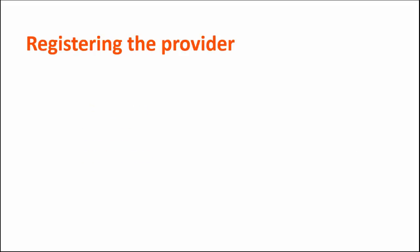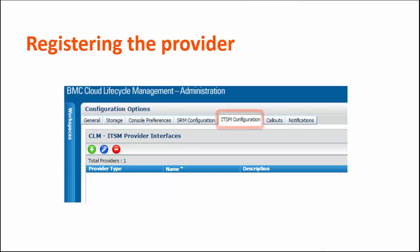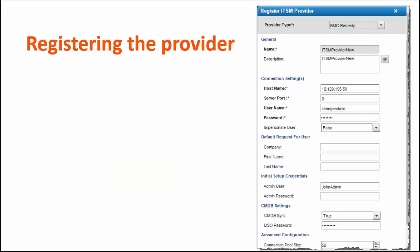The next step is to register the provider. First, log in to the BMC Cloud Lifecycle Management Administration console as the Cloud Administrator. Go to Workspaces Configuration. Then click the ITSM Configuration tab. Click the Register icon. In this dialog box, select BMC Remedy from the Provider Type list and complete the fields.